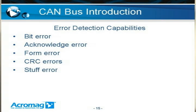There are five different error detection capabilities designed into CAN. The first two are detected by the transmitter. A bit error is detected when the transmitter outputs a dominant or recessive state but detects the opposite of what it expected. An acknowledge error occurs when the transmitter does not detect an acknowledgment for a transmission it sends, meaning none of the receivers received the message without error.